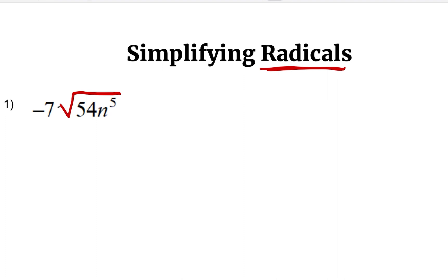First, we are going to find the number found in this area of the problem — we call this number the index. If you don't find any number, the smallest number, which is the invisible number, is two. It can be any number higher than two, but the smallest number that can go in this area is two.